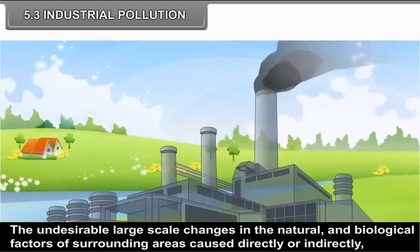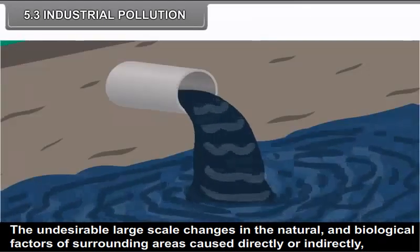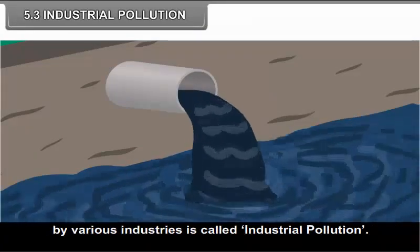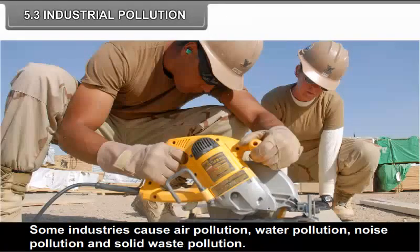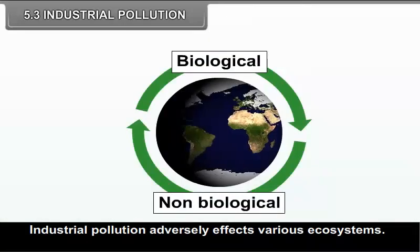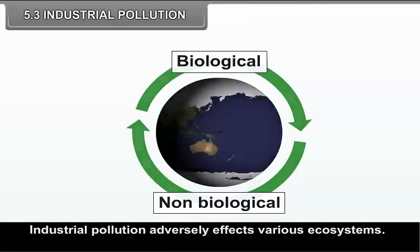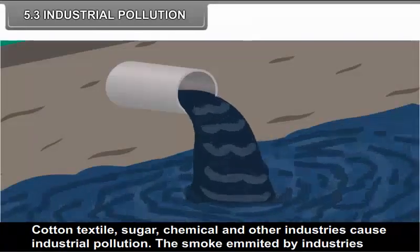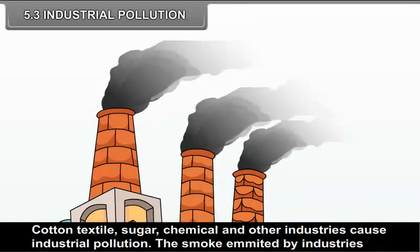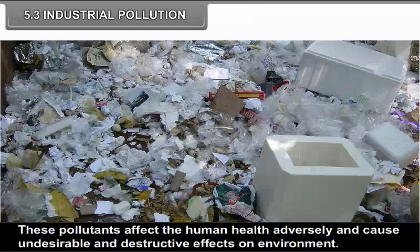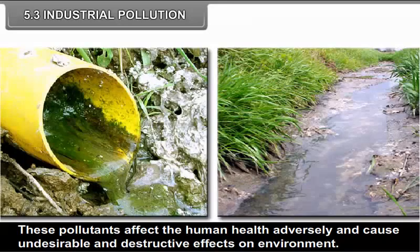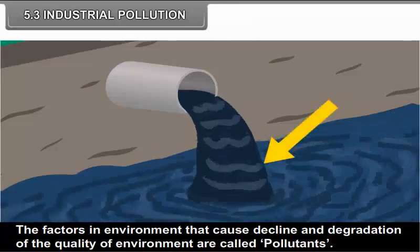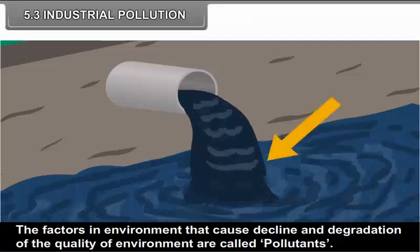Industrial pollution refers to the undesirable large-scale changes in the natural and biological factors of surrounding areas caused directly or indirectly by various industries. Some industries cause air pollution, water pollution, noise pollution and solid waste pollution. Industrial pollution adversely affects various ecosystems. Cotton textile, sugar, chemical and other industries cause industrial pollution. The smoke emitted by industries and water and solid waste contain pollutants that affect human health adversely and cause destructive effects on the environment. Factors that cause decline and degradation of the quality of environment are called pollutants.